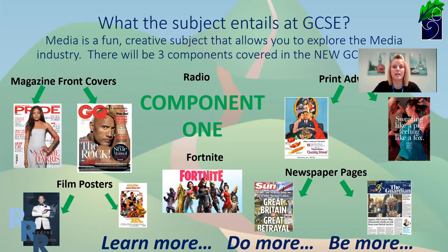Component one comprises of magazine front covers, and we're going to pay particular attention to GQ magazine and Pride. We're also going to be focusing on print advertisements, and we will be looking at the 1950s Quality Street advert and then comparing it to a more recent one, which is This Girl Can. We're going to be focusing on film posters, and in particular we're going to be looking at the James Bond franchise — a recent one, which is the Spectre film poster, comparing it to a historical one, which is the 1970s The Man with the Golden Gun.